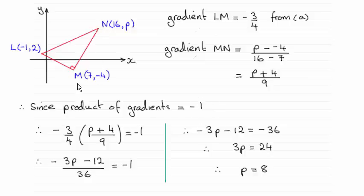We already had worked out the gradient of LM in the first part of the question. It turned out to be minus three quarters.